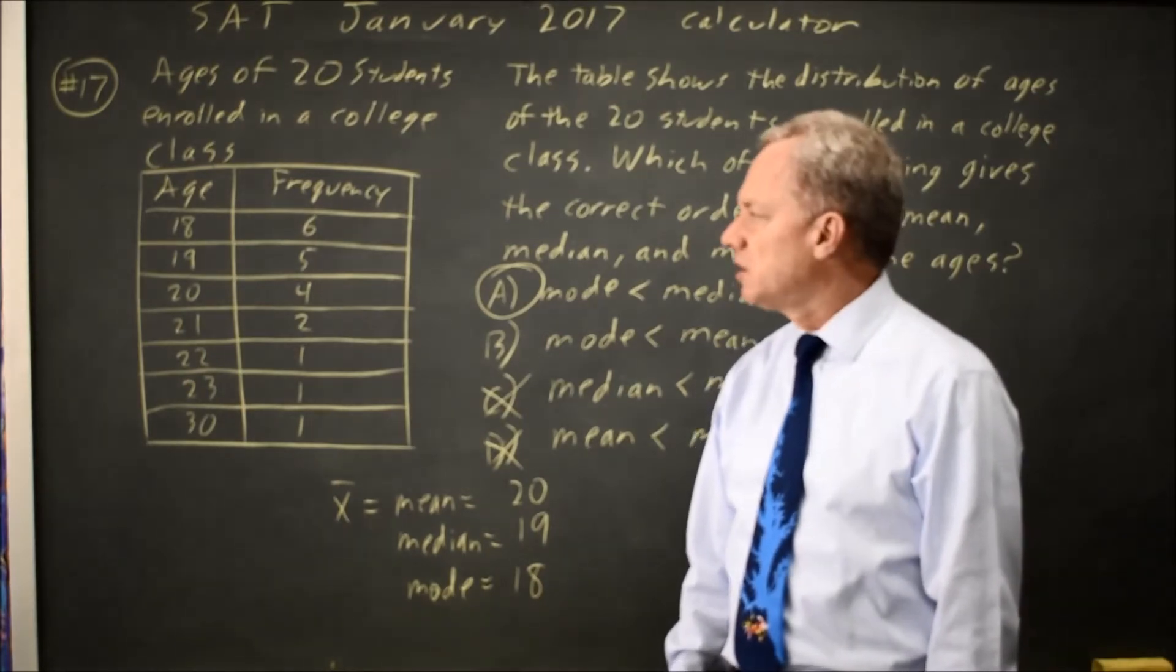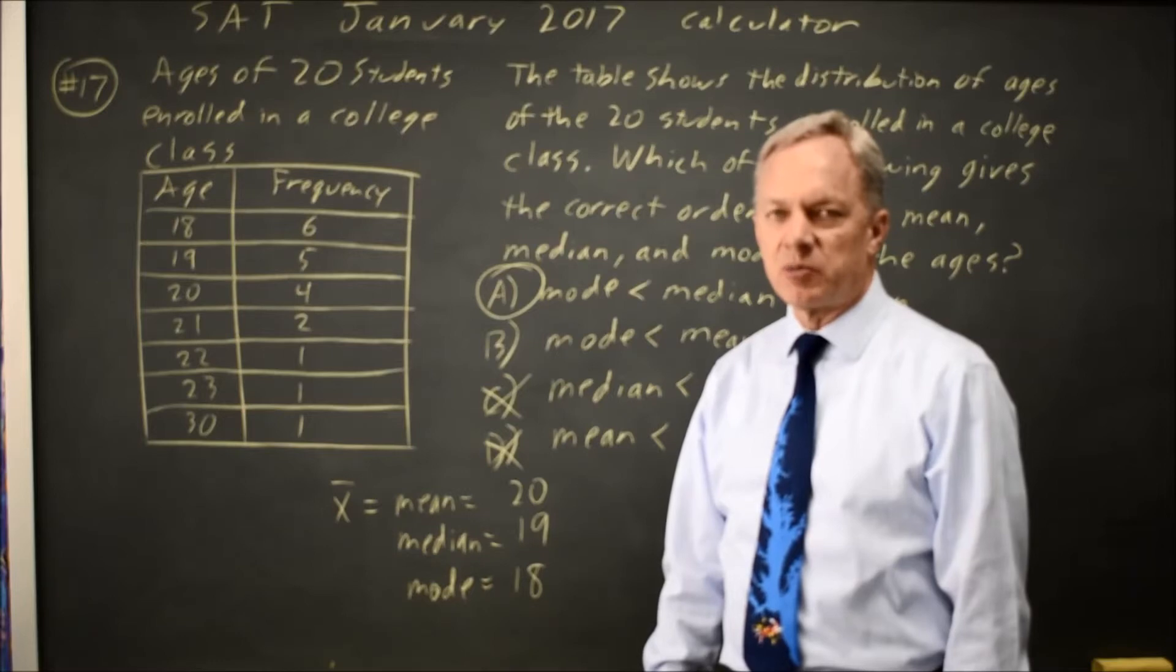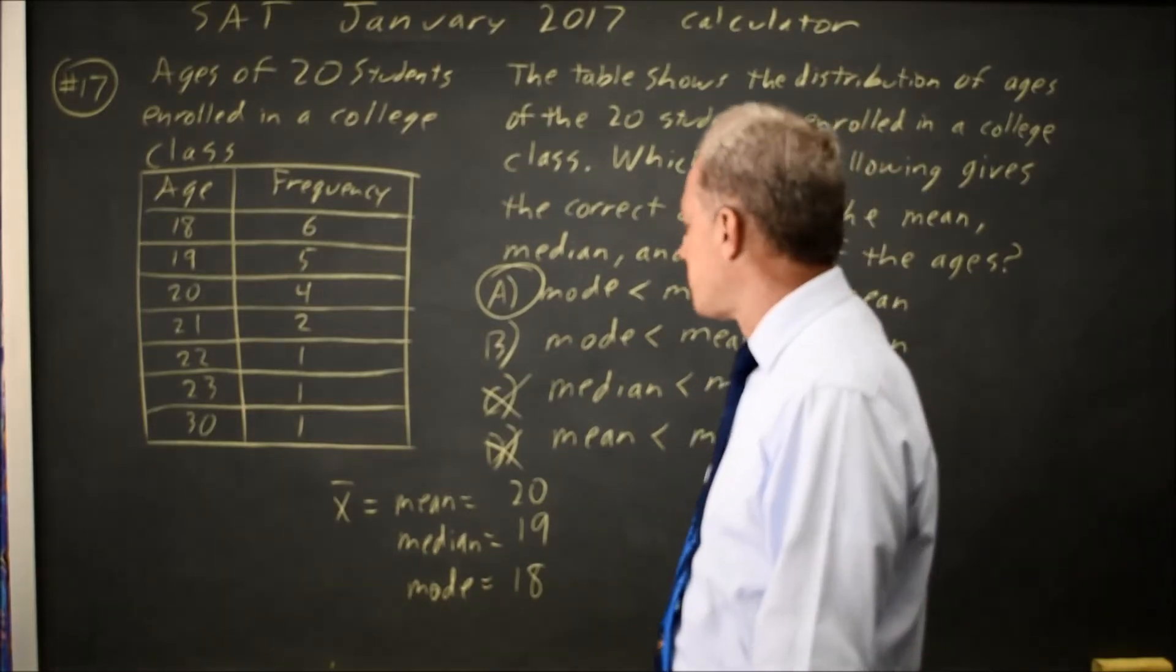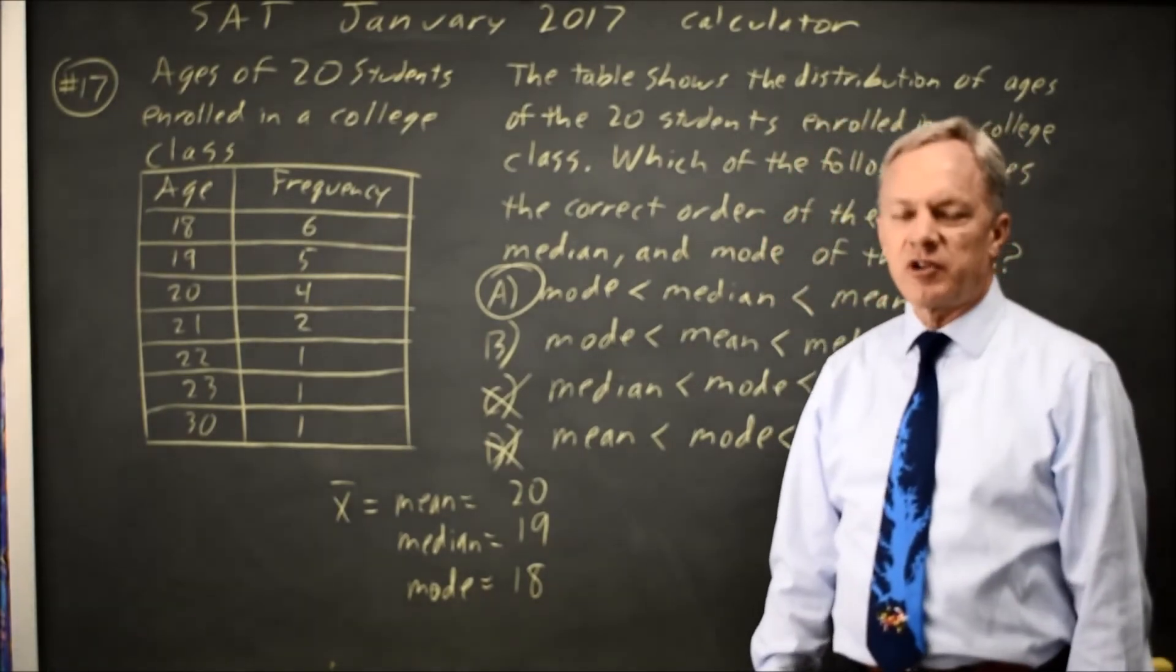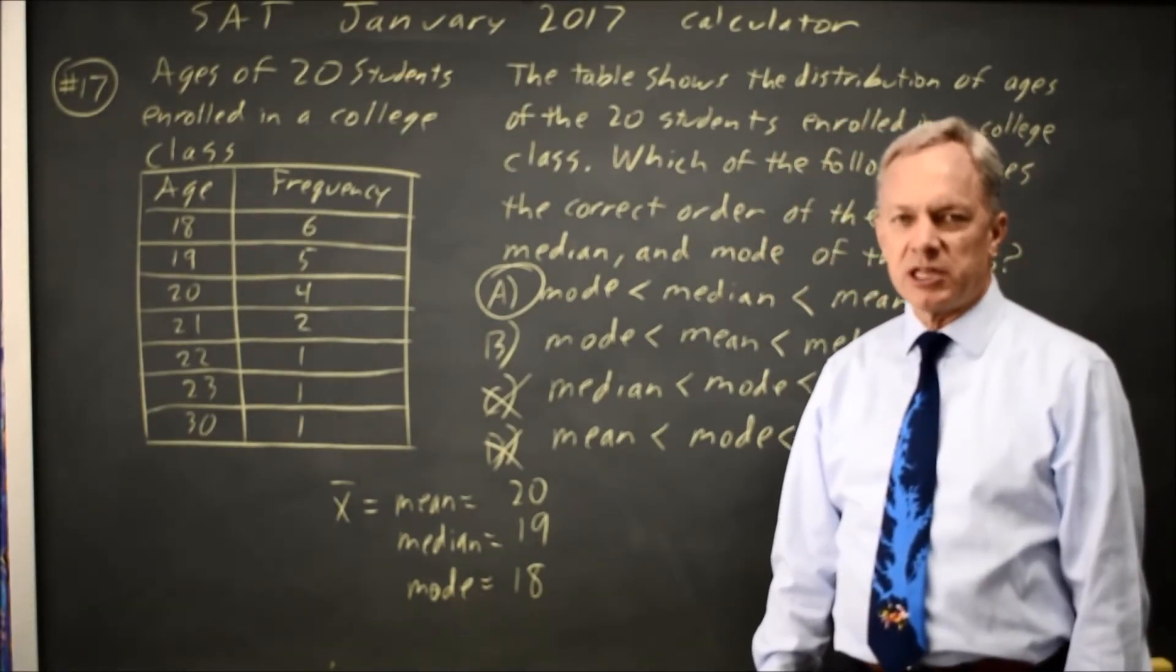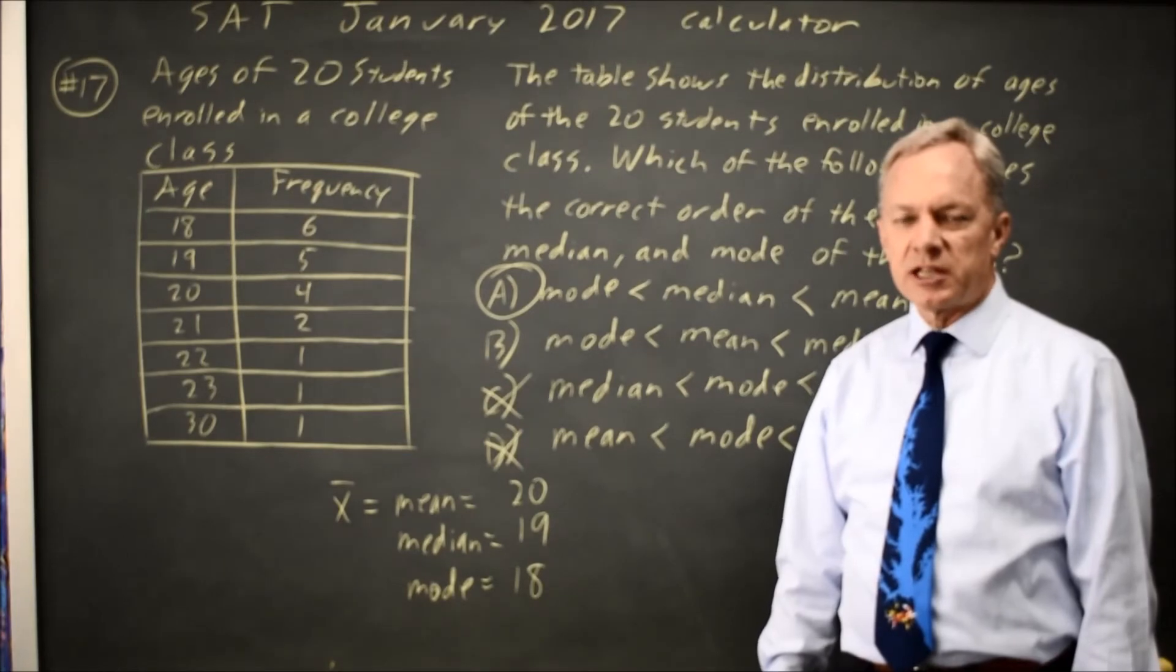But it's so fast to calculate the values that you might as well just figure them rather than using general principles to estimate the mean. Although you will, in other questions, need to know that if you have high outliers, the mean will be above the median. So make sure you take note of that.